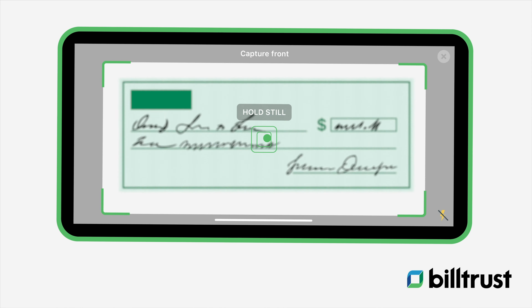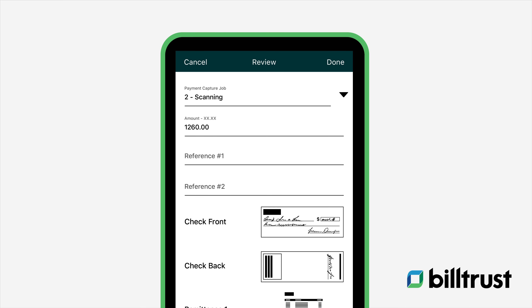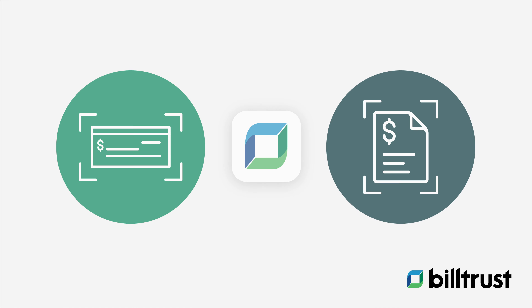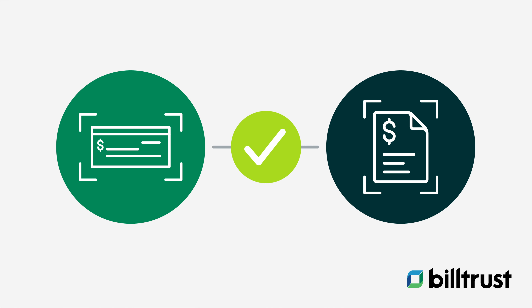After receiving a check, simply sign into the app and take a photo. Then snap a picture of the remittance information or enter it with the app. When you enter checks and remittance at the same time, cash application is automated.